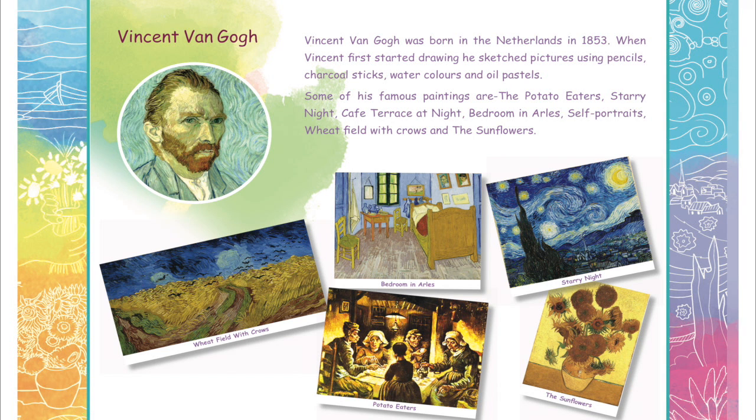Vincent Van Gogh was born in the Netherlands in 1853. When Vincent first started drawing, he sketched pictures using pencils, charcoal sticks, watercolor and oil pastels.